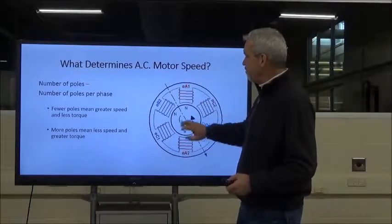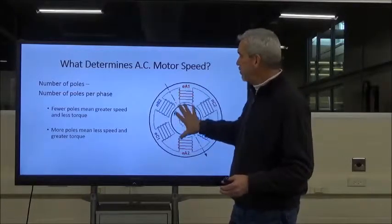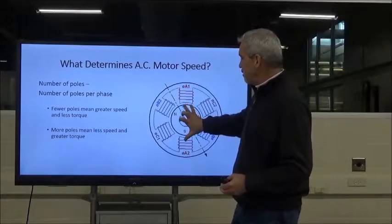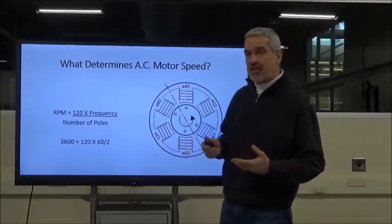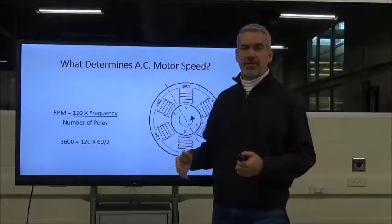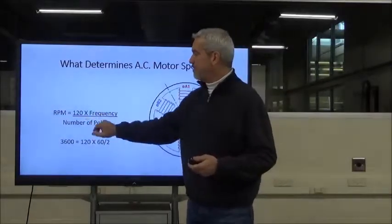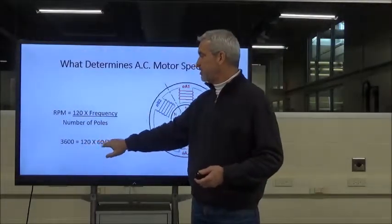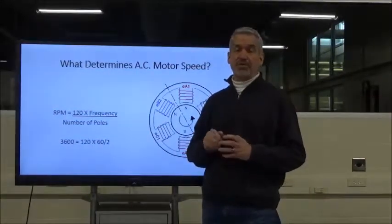This is a two-pole motor. Each phase has windings around two different poles, giving us two poles total. You can calculate RPM mathematically: RPM = 120 × frequency ÷ number of poles. With 60 hertz frequency and two poles: 120 × 60 ÷ 2 = 3,600 RPM. Notice I say theoretically — we'll get into why in just a moment.